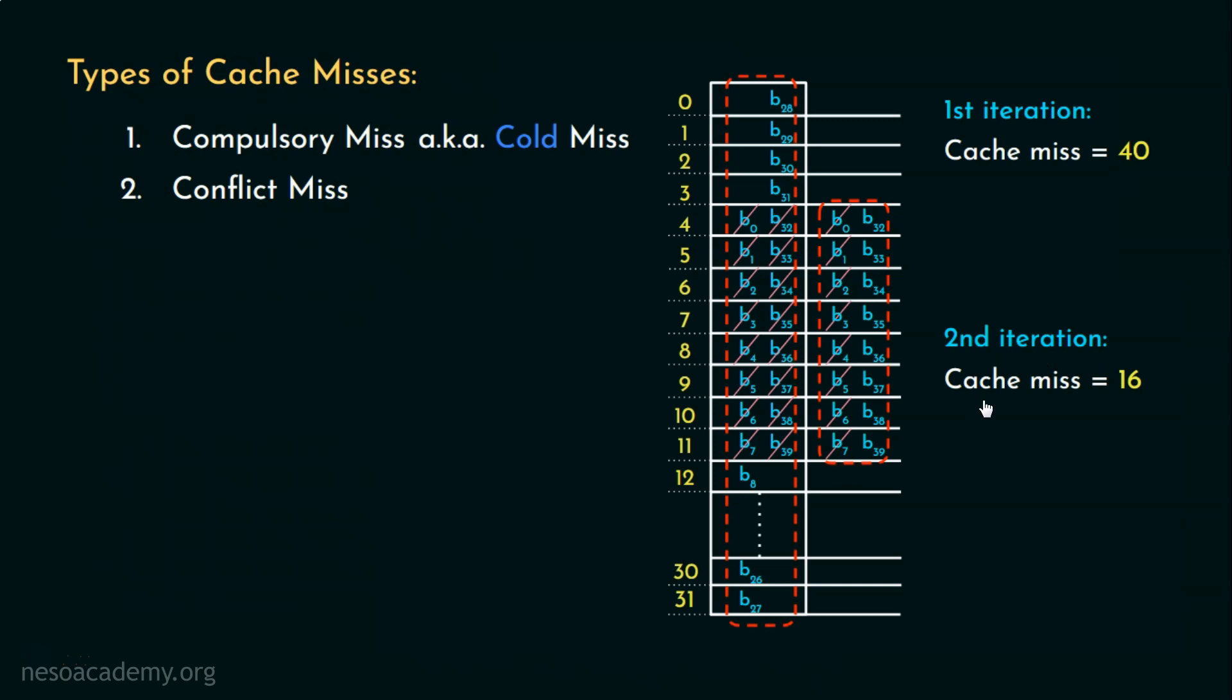Later, during the second iteration, we were again in need of those blocks. Similarly, during the second iteration itself, we again required the blocks B32 to B39. But this time, all these were conflict misses. For your information, conflict miss is also known as collision miss or interference miss.